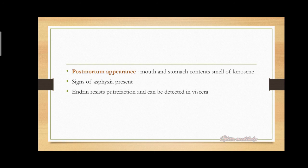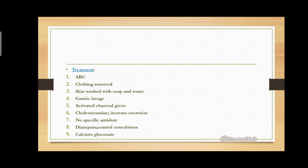Treatment: maintain ABC — airway, breathing, circulation. Remove clothing and wash skin with soap and water. Perform gastric lavage or evacuate the stomach using emetics (agents that cause vomiting) and cathartics (agents that increase defecation). Give activated charcoal to decrease absorption of the poison. Cholestyramine, an anion exchange resin, can increase fecal excretion of organochlorins. There is no specific antidote. For convulsions, administer diazepam; calcium gluconate is also found useful.